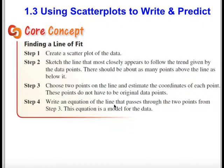Step 3: Choose two points on the line and estimate the coordinates of each point. These points do not have to be original data points. Step 4: Write an equation of the line that passes through the two points from step 3. This equation is a model for the data.